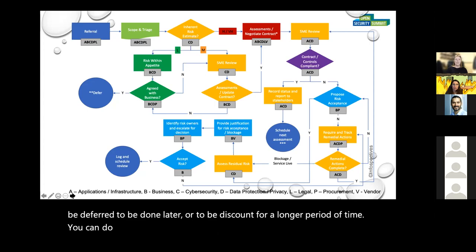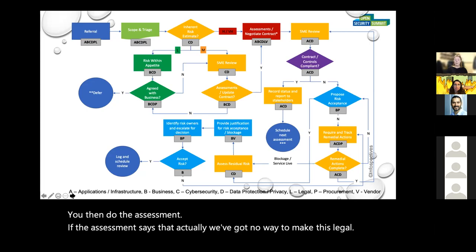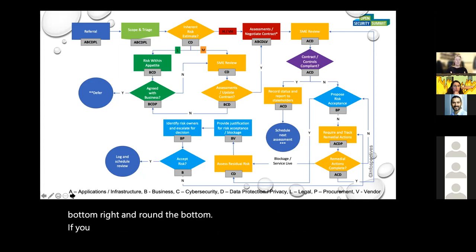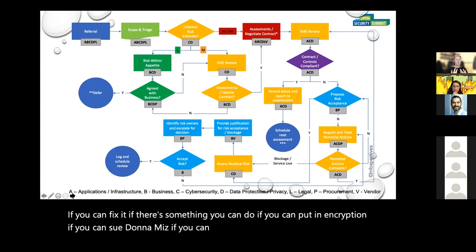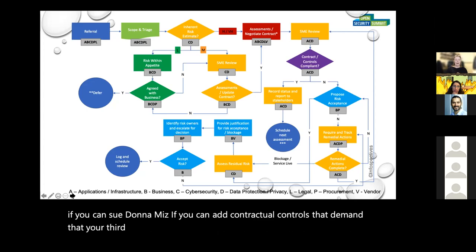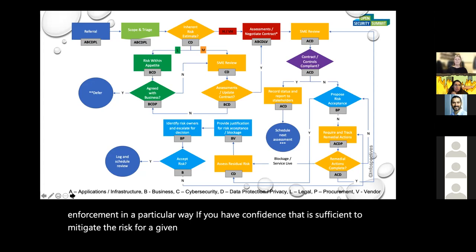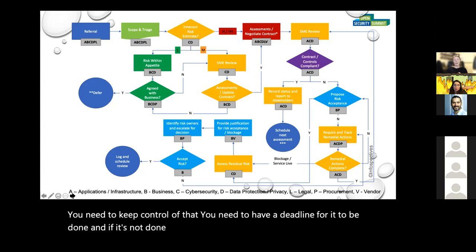You then do the assessment. If the assessment says there's no way to make this legal, you decide whether you can tolerate that risk — it goes around the risk management loop. If you can fix it — if you can put in encryption, pseudonymization, or contractual controls that demand your third party challenges if asked to submit data to law enforcement in a particular way — and you have confidence that's sufficient to mitigate the risk for a given transfer, then you need to track that, keep control of it, set a deadline. If it's not done, it gets sent around the loop again.